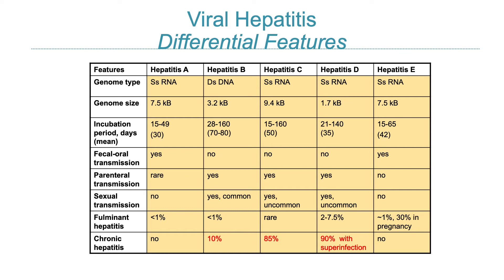Hepatitis B virus is also contracted via blood — through childbirth, unprotected sex and other routes. HBV progresses to chronic hepatitis in approximately 20% of cases, though this depends on age at infection. Children under 6 years old are most likely to develop chronic infection, around 50%, with the percentage increasing the younger they are. Chronic HBV is also associated with liver cancer.